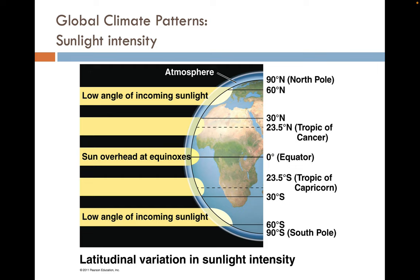Regarding global climate patterns and sunlight density: the equator gets the most sunlight because the surface of the Earth at the equator is most directly in line with the rays of the sun. As we go further north or south, we move at more of an angle, so the same beam of light — which was concentrated in a single circle — is now spread out over a greater surface area closer to the poles. This means the angle of incoming sunlight is lower, making the actual sun energy less intense per square meter.